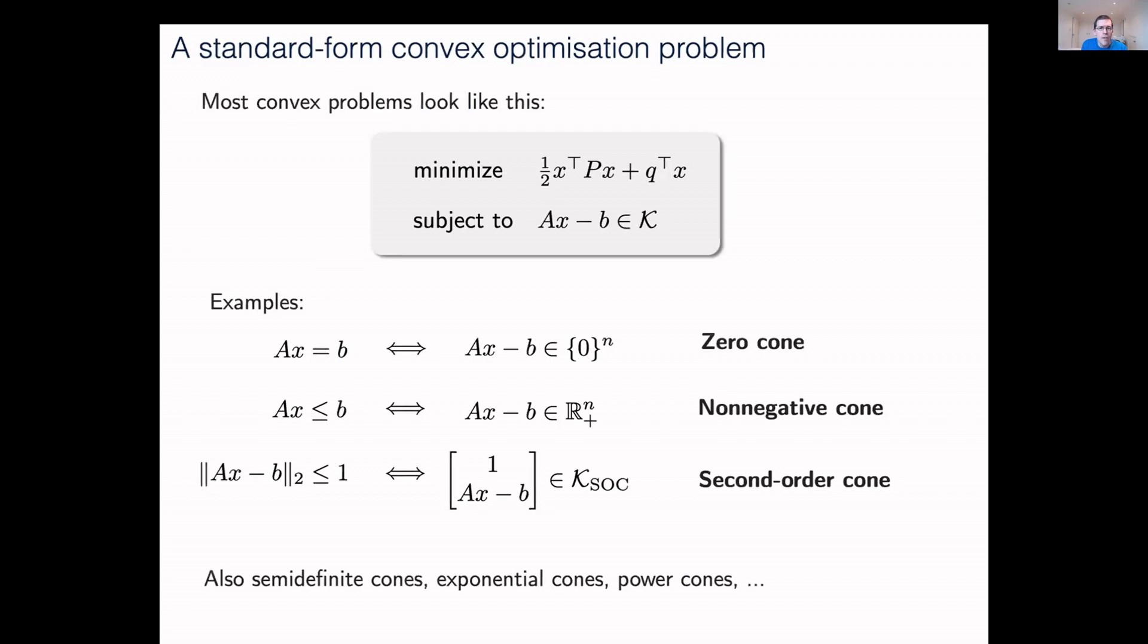This is a very flexible way of describing your problem, depending on the type of cone that you pick. If you make K the zero cone, then you have an equality constraint. If you make it a non-negative cone, you get what's called a quadratic or linear program.